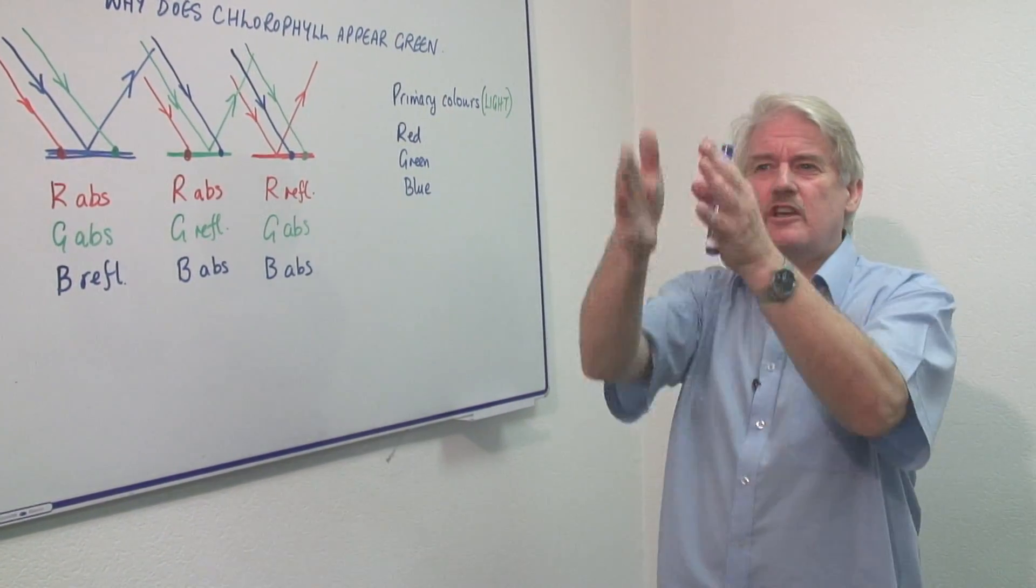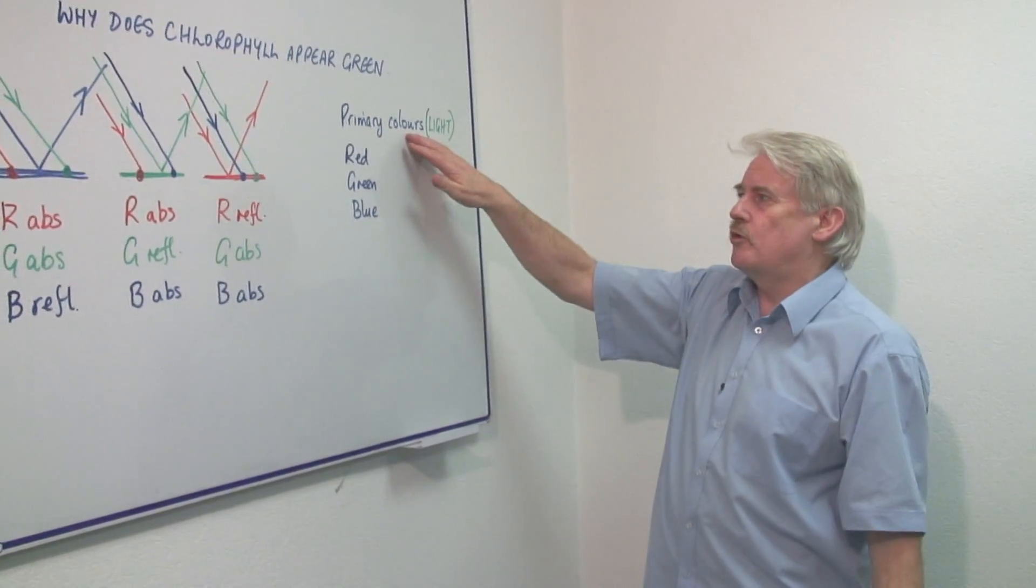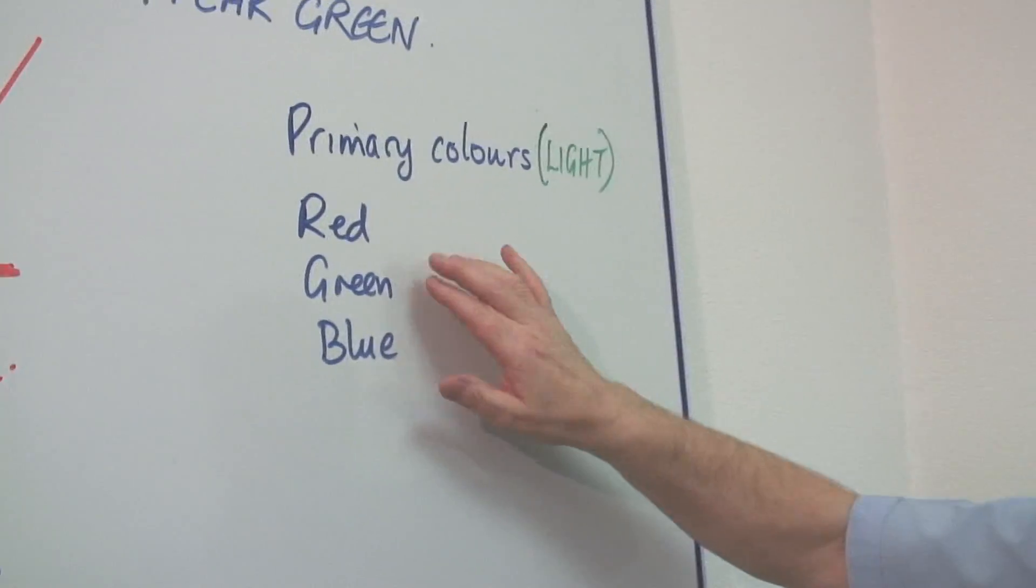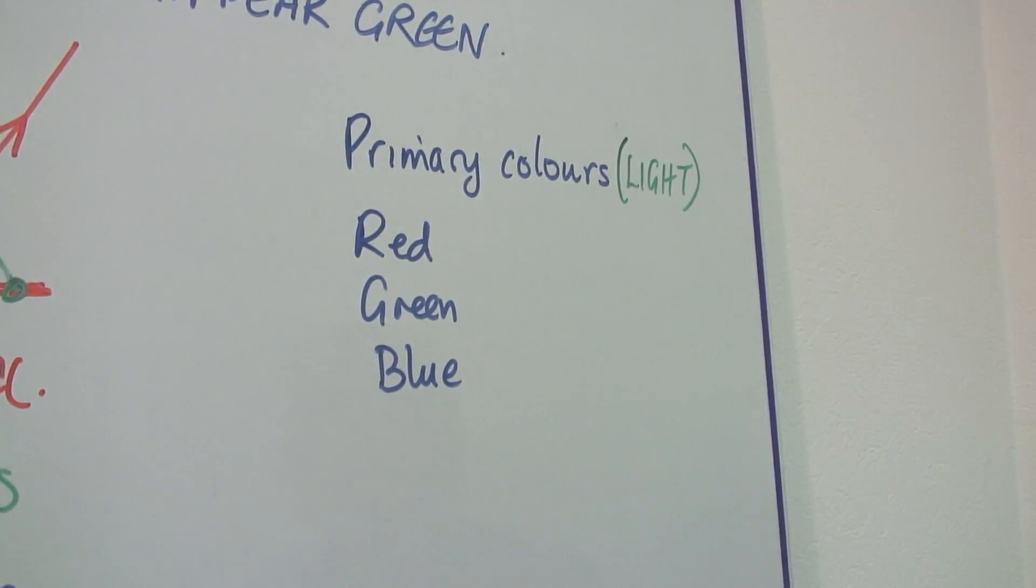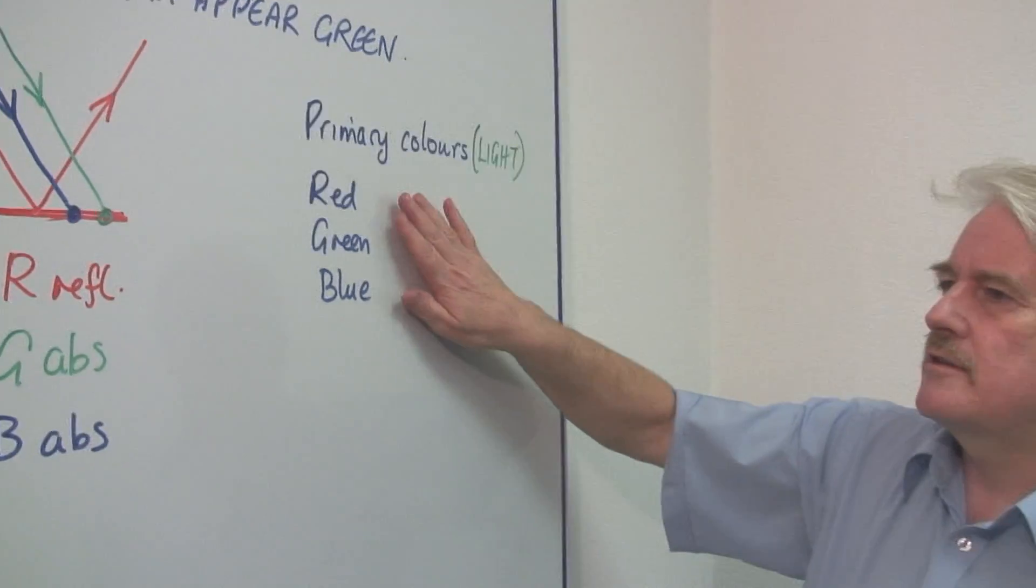From that spectrum, we can cut it into three rough areas called primary colors: red, green, and blue. Notice these are red, green, and blue—this is different from paints, so be careful. These are the basic primary colors of light.